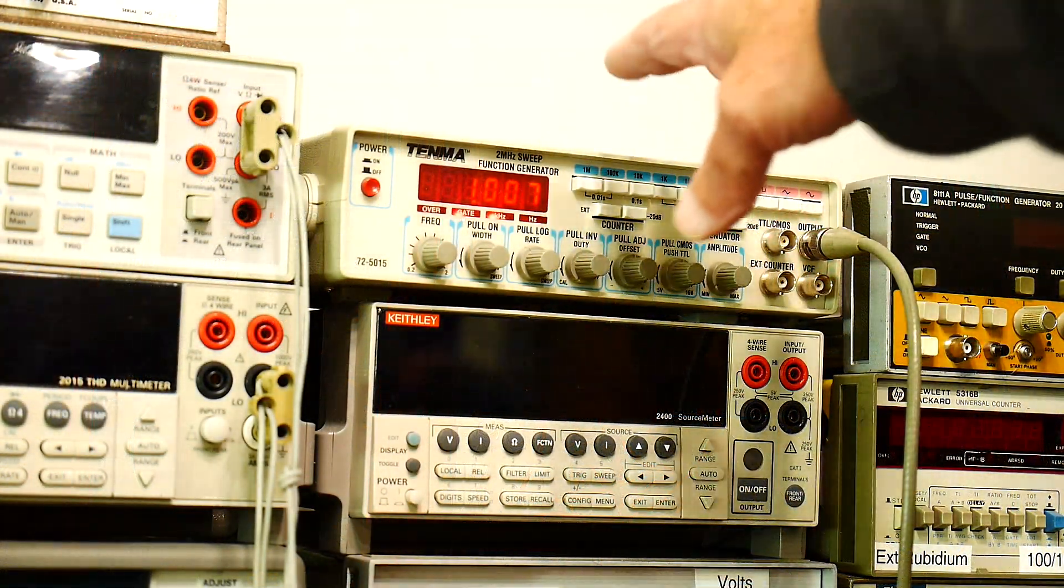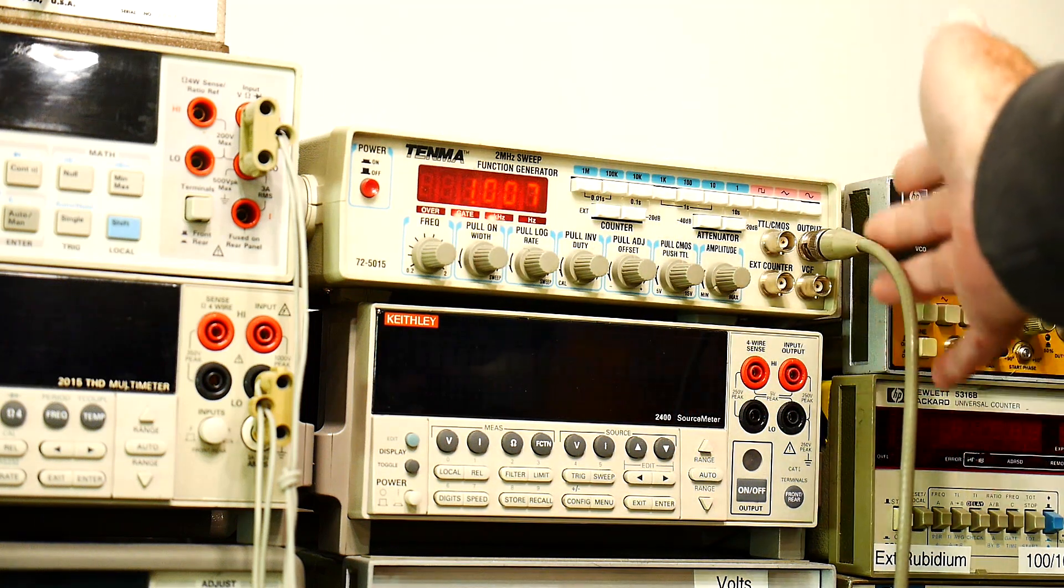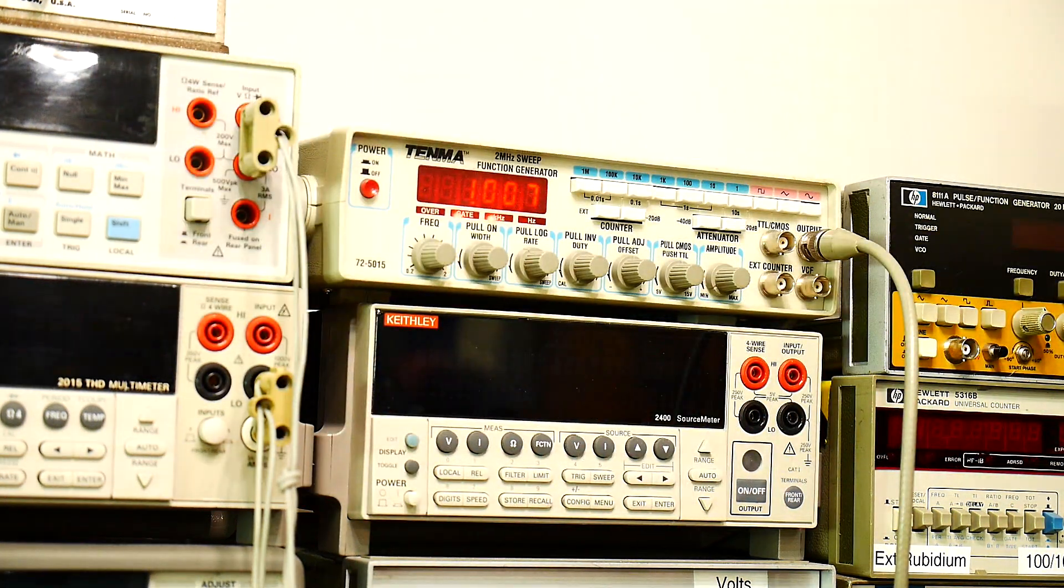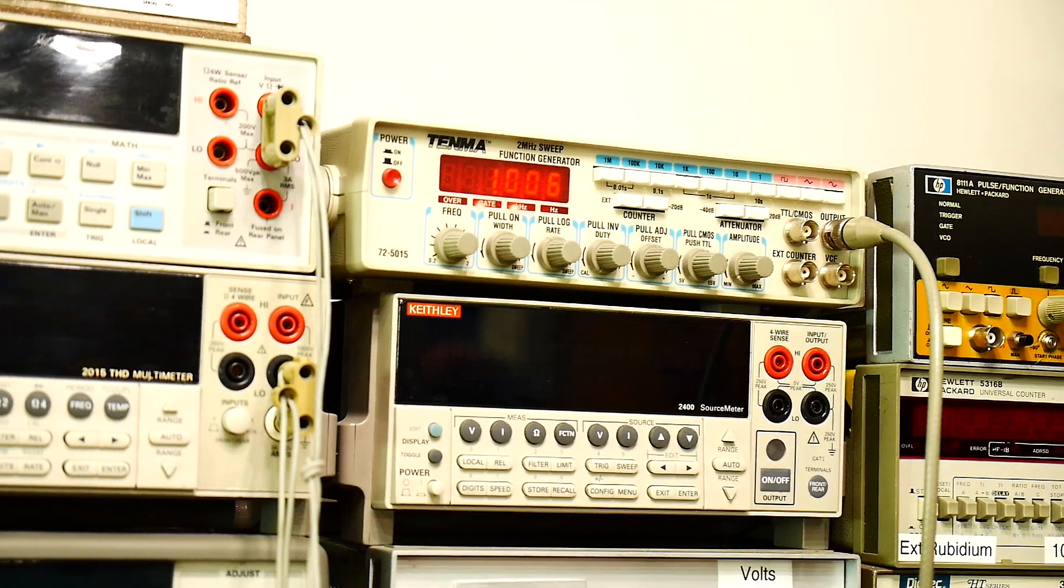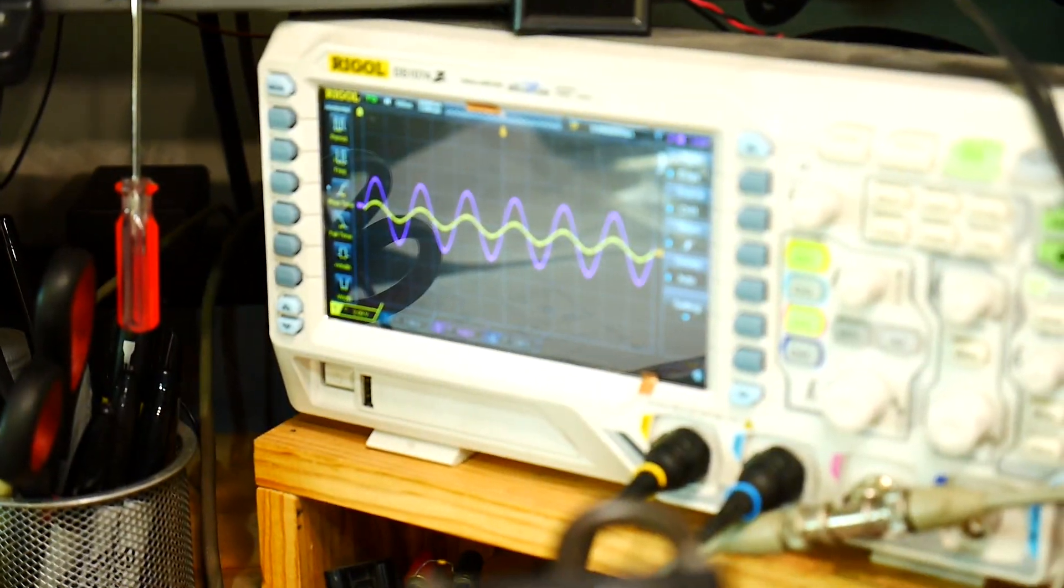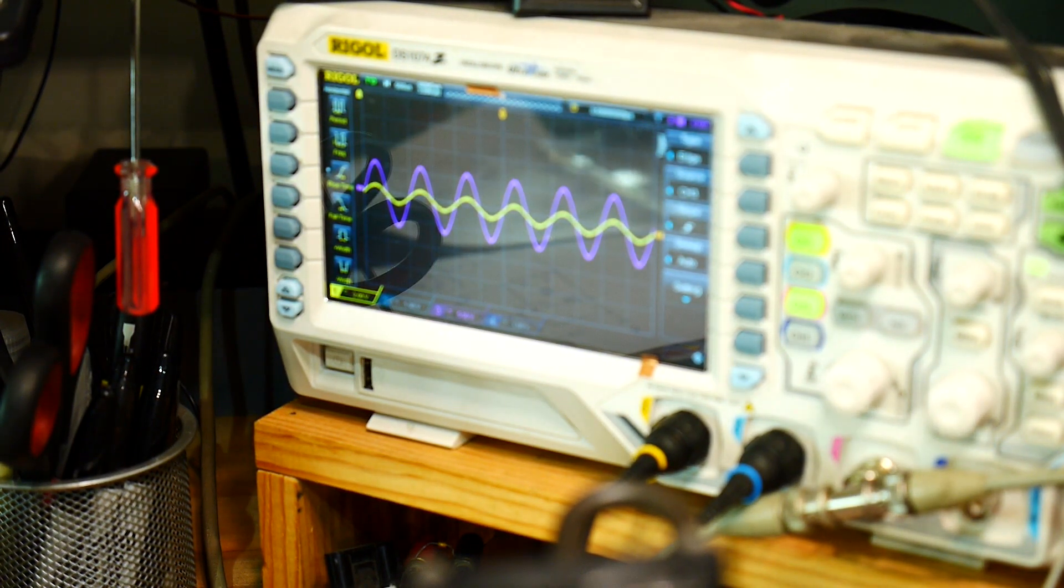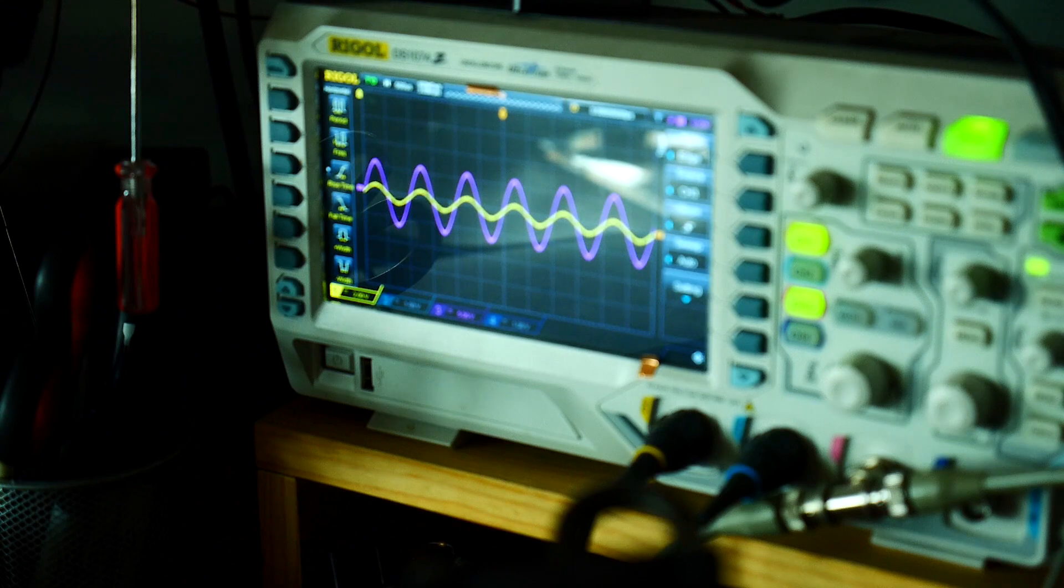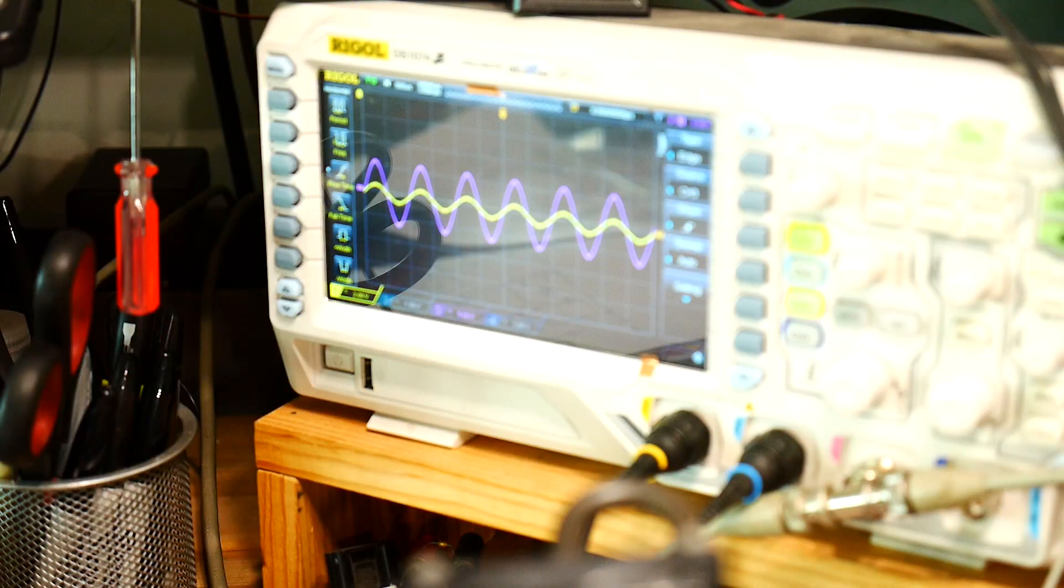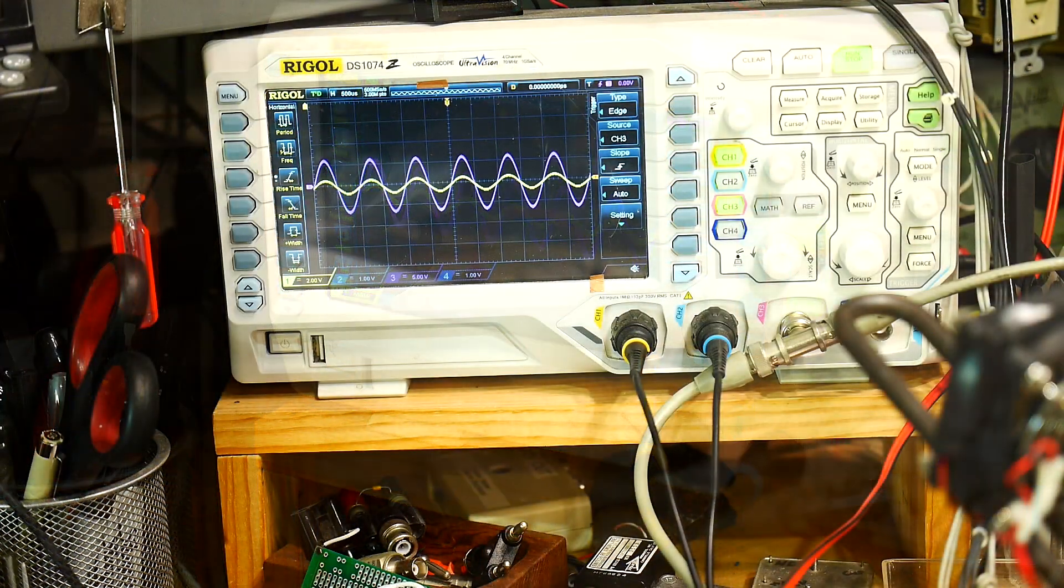Okay. So we have the function generator set to one kilohertz and we're outputting the signal and the signal is going to be monitored here. I'm going to turn off the room light so it don't get glare. That's a glare from the outside. That's not helping too much. Let me rotate the camera around. There we go.